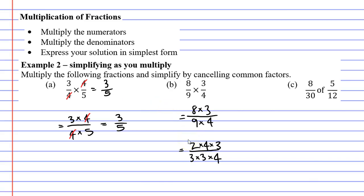Now we have some common factors. I'm going to cancel one 3 above and one 3 below. I'm also going to cancel one 4 above and one 4 below. This gives me a solution of 2 over 3 or 2 thirds.